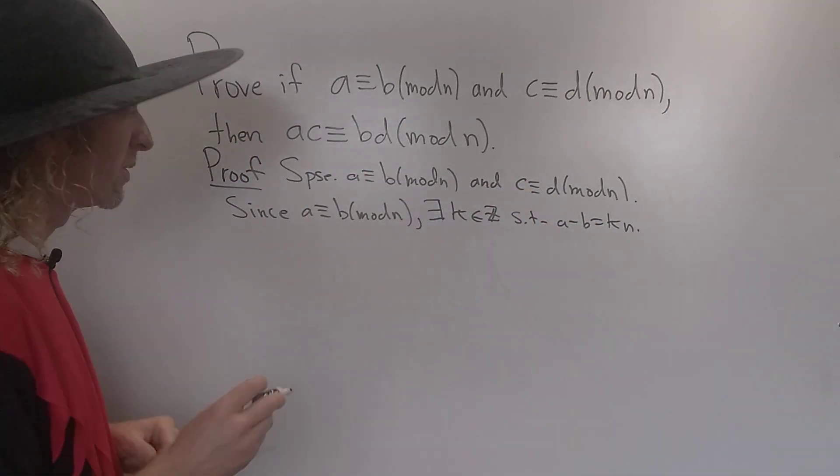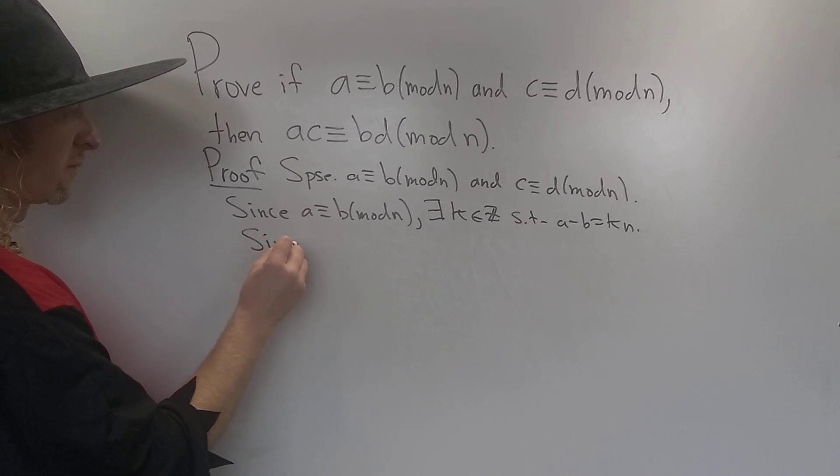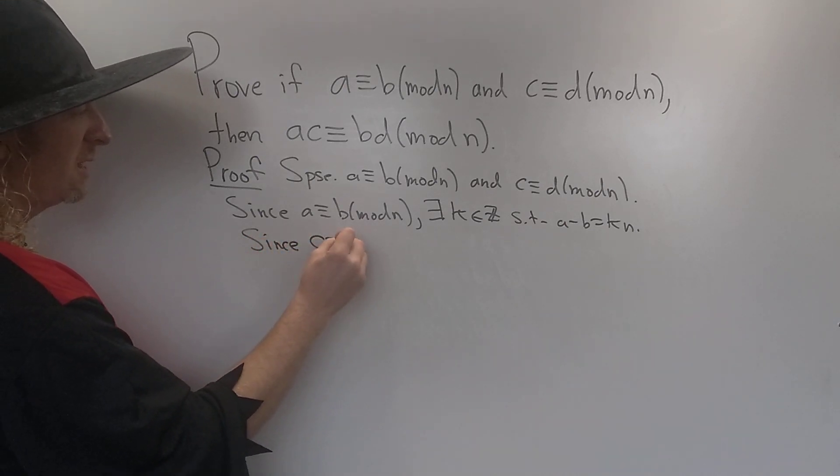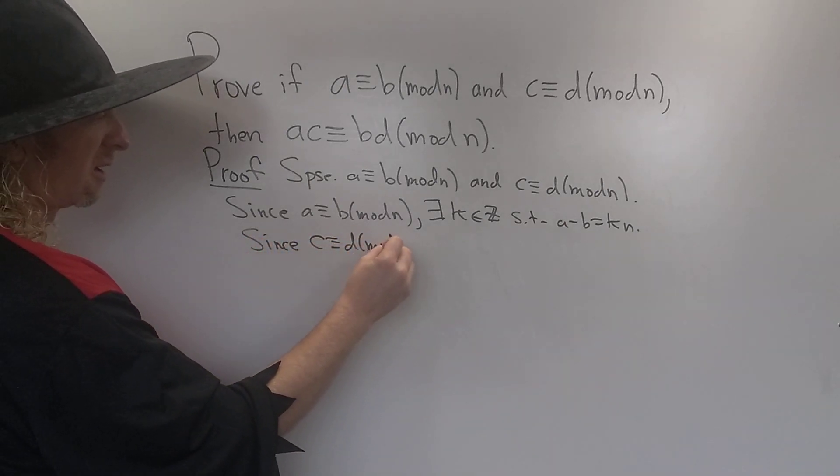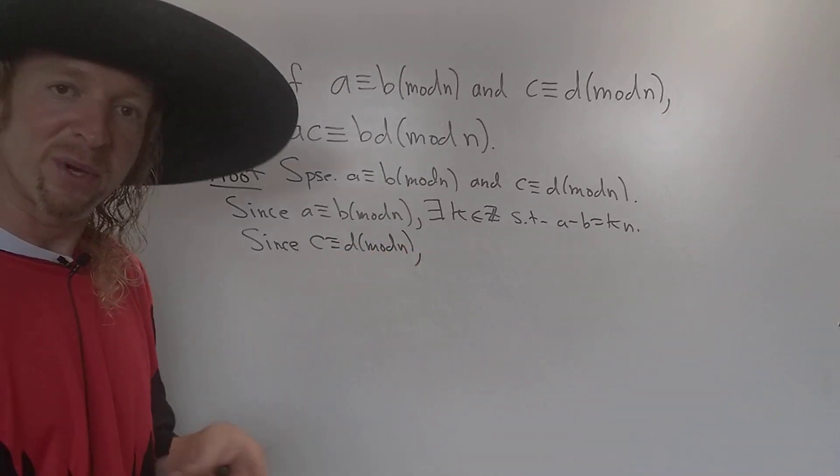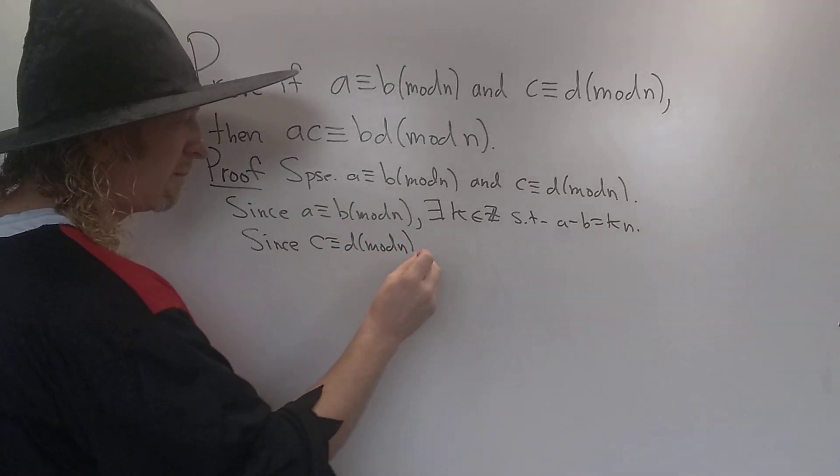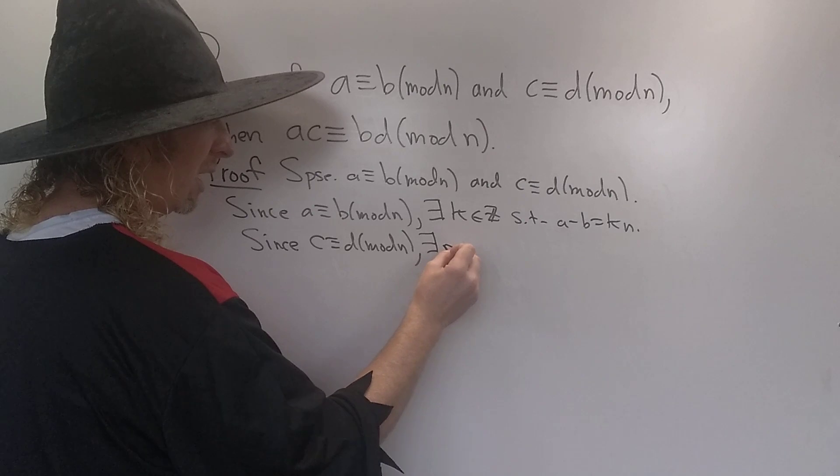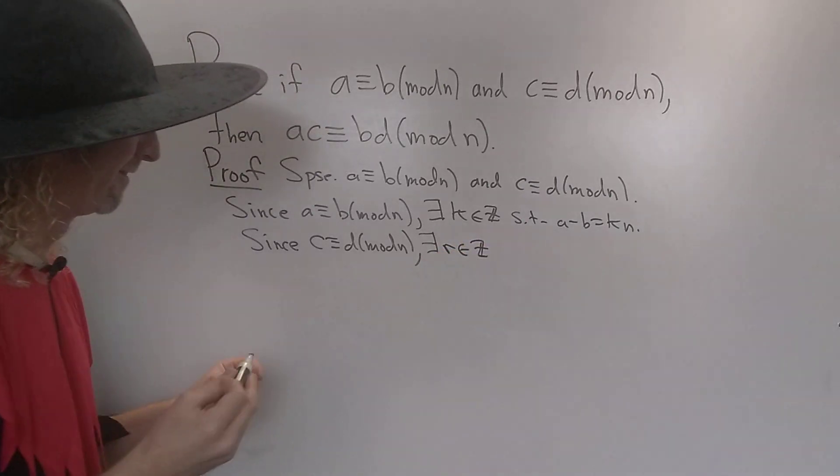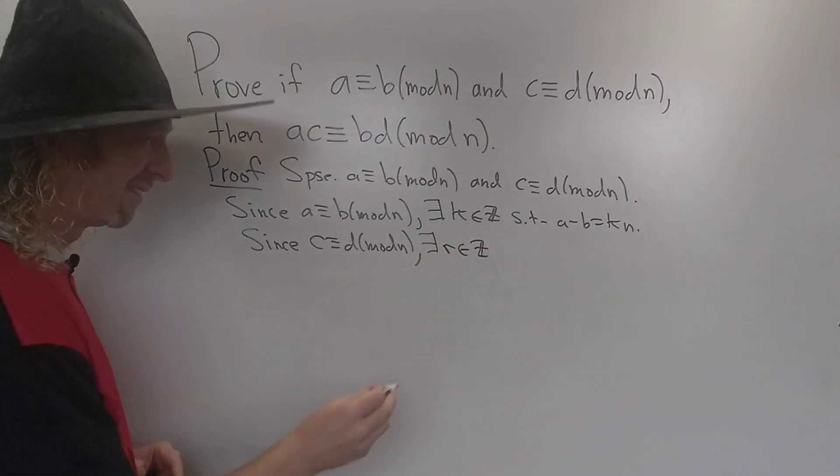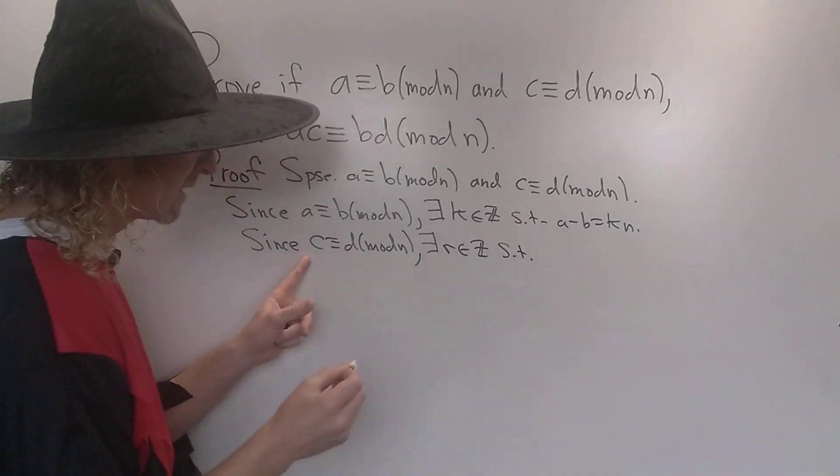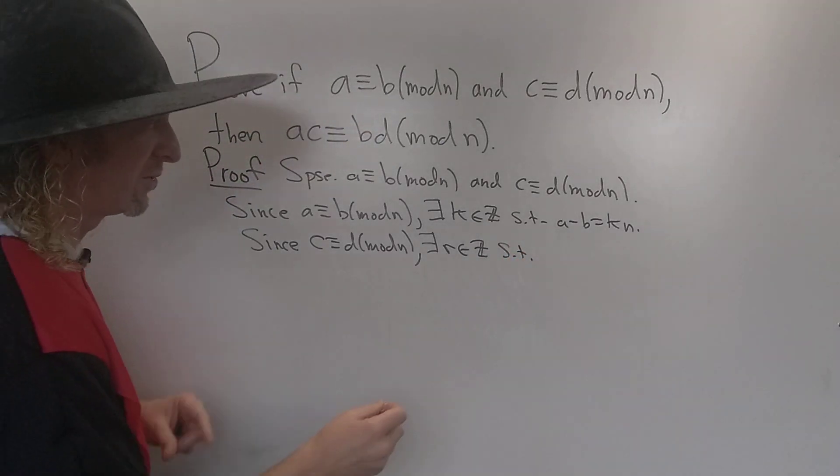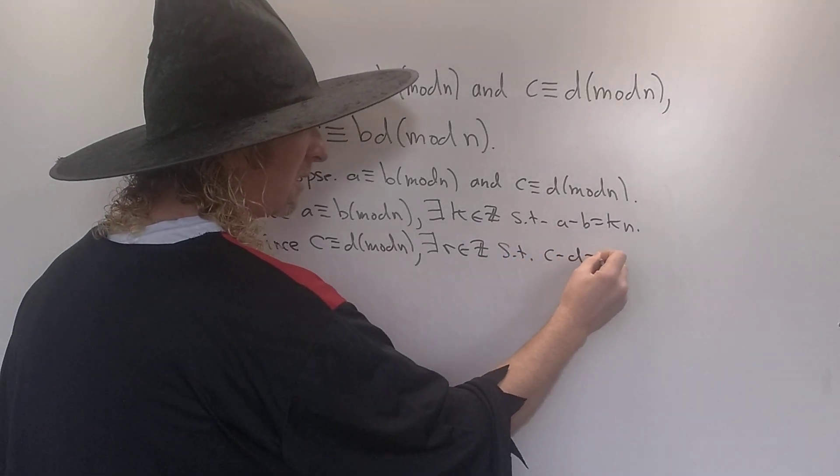Now we do the same thing for this one. So since C is congruent to D modulo N, this means there exists an integer. Now we can't use the same letter, right? So let me use R. I like R. I feel like a pirate. So there exists an R such that C minus D is a multiple of N. So C minus D is equal to RN.